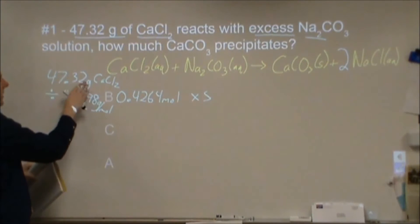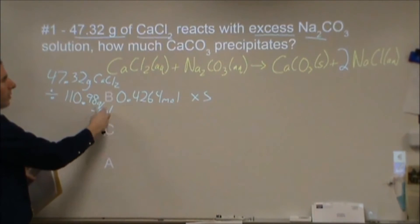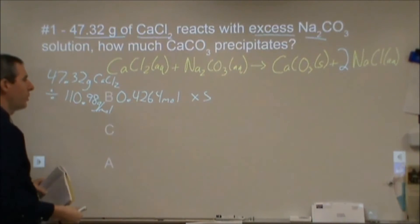It's good to understand what you're doing here. 110.98 is how many grams there would be of this chemical if we had one mole. We have less than that amount, which means we should have less than one mole. We have close to half, so we expect something around 0.4 or something like that. When we divide, we get 0.4264 moles.